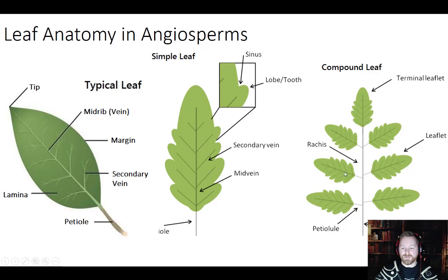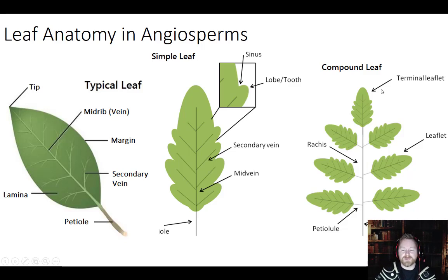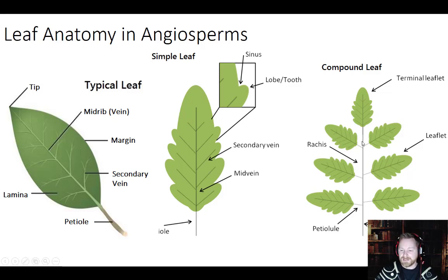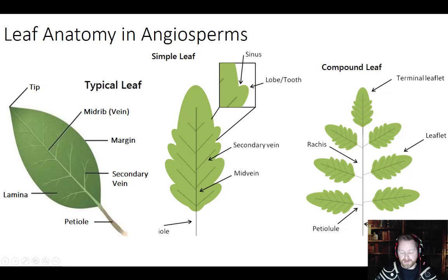This is a compound leaf. This is not seven leaves — this is seven leaflets. This is one leaf. A compound leaf is one leaf made up of a bunch of different leaflets. The part connecting it to the stem is still the petiole. The main axis holding up the leaflets is called the rachis. The part that holds an individual leaflet is called the petiolule — the smaller version of the petiole. The leaf at the tip is always called the terminal leaflet. If there's only one terminal leaflet, it's an odd-pinnate compound leaf; if there are two, it's an even-pinnate compound leaf.